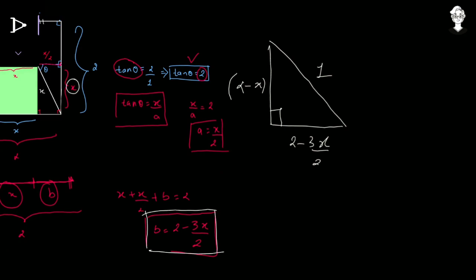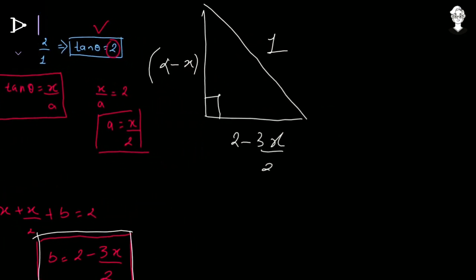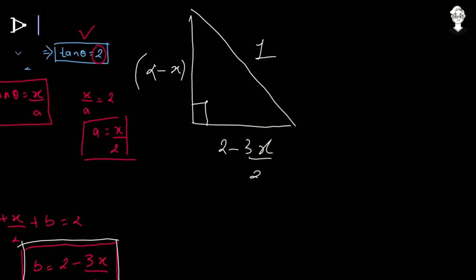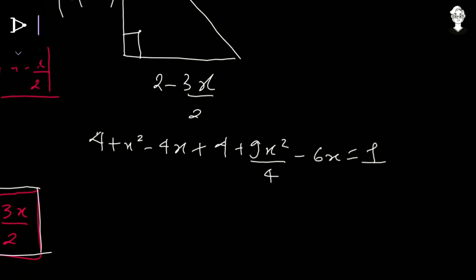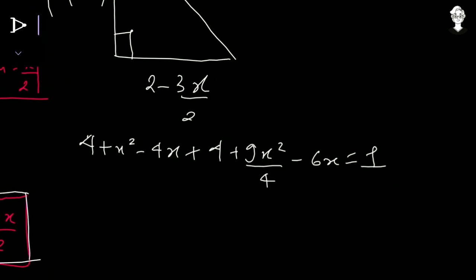We have a final right-angle triangle with hypotenuse equal to 1, base equal to B which is 2 minus 3x/2, and side equal to 2 minus x. Applying the Pythagorean theorem: (2 minus x) squared plus (2 minus 3x/2) squared equals 1, which expands to 4 plus x squared minus 4x plus 4 plus 9x squared/4 minus 6x equals 1. Combining terms gives 13x squared/4 minus 10x plus 7 equals 0.